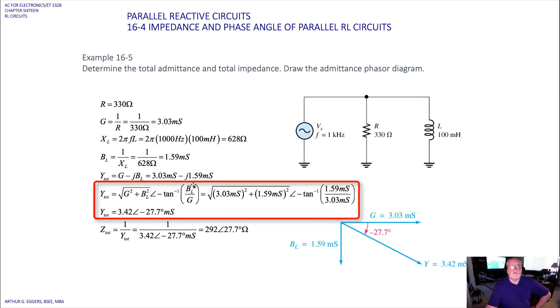The square root of G squared plus B sub L squared, and the inverse tangent of the susceptance over the conductance gives us a value then. When we take the Pythagorean theorem and the inverse tangent, we get a value in polar form: 3.42 at an angle now of minus 27.7 milliSiemens.